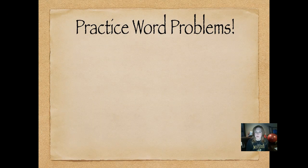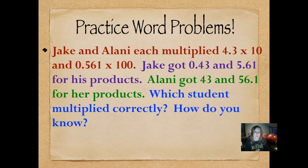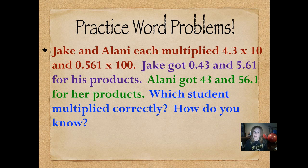When I ask students what worries them most about math, a lot of times it's word problems. Word problems aren't really any more difficult than regular computation — we just have to read the problem and figure out what it's asking. Don't forget to underline key words on a written test. Here's our problem: Jake and Alani each multiplied 4 and 3 tenths times 10, and 500 and 61 thousandths times 100 — two separate problems. Jake got 43 hundredths and 5 and 61 hundredths. We need to check Jake's answers and Alani's answers and see how they did.